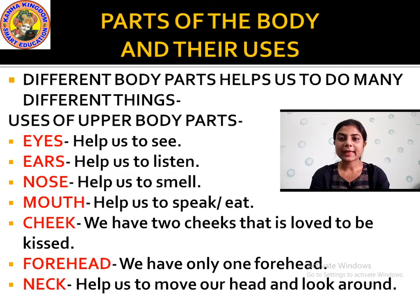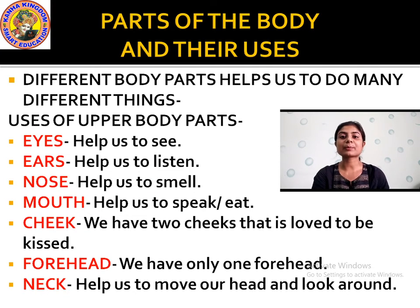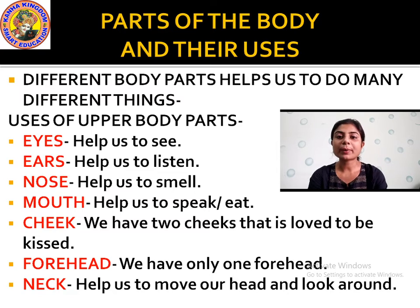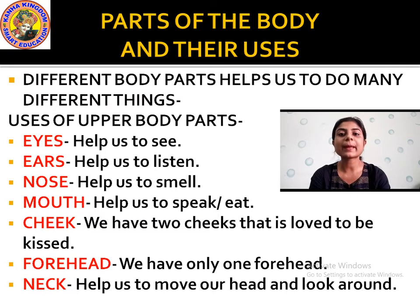Now let us study the parts of the body and their uses. Different body parts help us to do many different things — they help us to work and do different things. First we will study the uses of upper body parts. The eyes help us to see. Ears help us to listen. Nose helps us to smell — any kind of fragrance or aroma that reaches us.